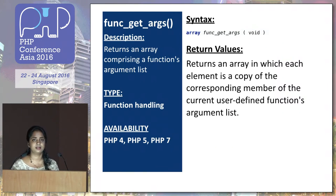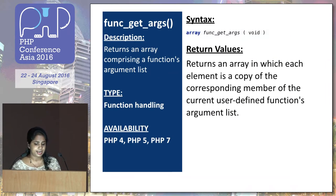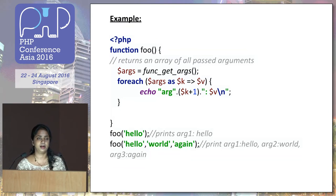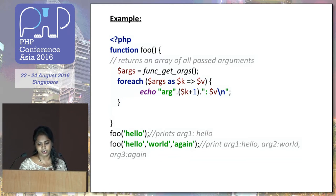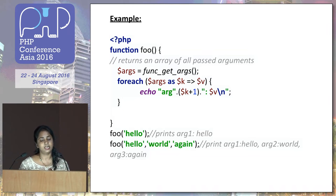Next is func_get_args. This is a very common function that is used to return the list of arguments passed to a PHP function. It's a function handling function, available in PHP 4, 5, and 7. It helps to retrieve an arbitrary number of arguments. Here's a simple function that accepts an arbitrary number of arguments — it uses func_get_args to retrieve them and loops through to print them. The first time I call it with one argument it prints one argument, and the next time I pass three arguments it prints all three.